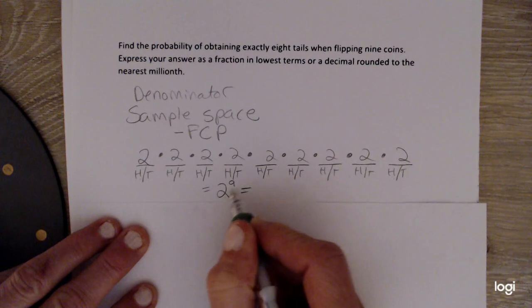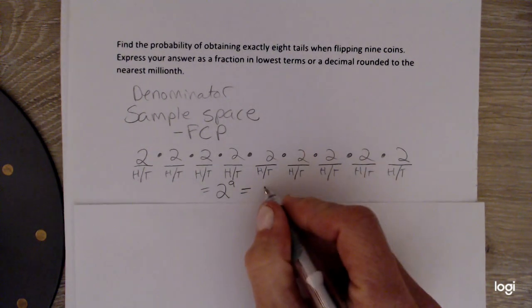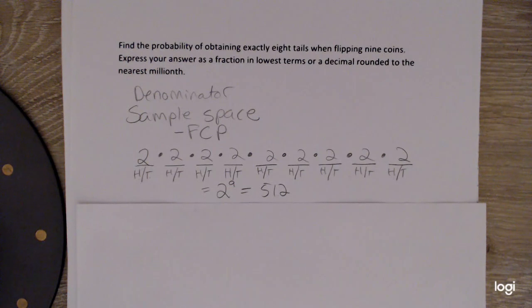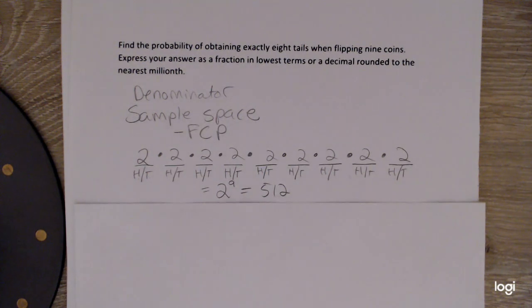Okay, repeated multiplication of the same factor is raising it to an exponent. That's the shortcut. So 2 to the 9th is 512. So that's going to be my denominator. That's how many outcomes altogether I have in my sample space. Now, clearly, I don't want to use a tree diagram to find that because it would have too many branches to fit on a piece of paper.